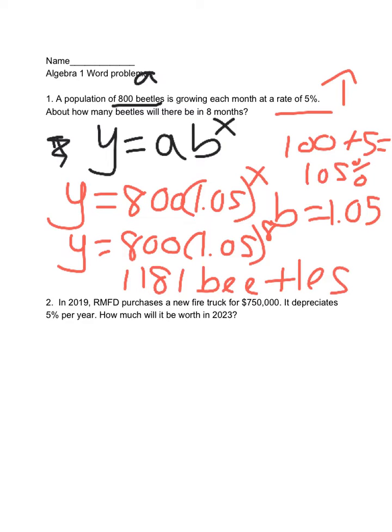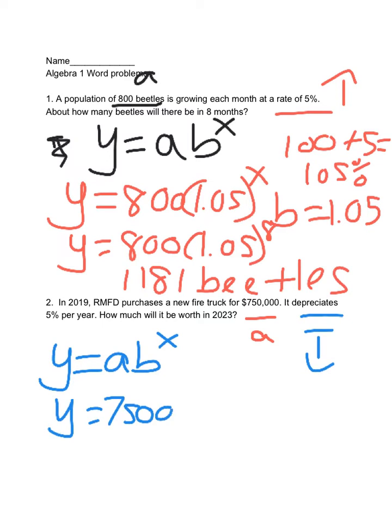Let's take a look at the next one. In 2019, RMFD purchases a new fire truck for $750,000. That's A, that's the starting amount. It's depreciating, so it's going down at 5% per year. Once again, we're starting with Y equals A times B to the X.